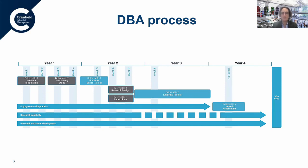The final deliverable — deliverable seven — is the impact assessment: what impact have you made to date, and what impact are you going to make going forward? What conferences do you want to attend, what papers do you want to write, what policy groups will you get involved with, do you have something you can patent? All the while we are engaging with practice, developing your research capability, and an important part is personal and career development — thinking about whether you're going to achieve those career goals and how we can support you in doing that.